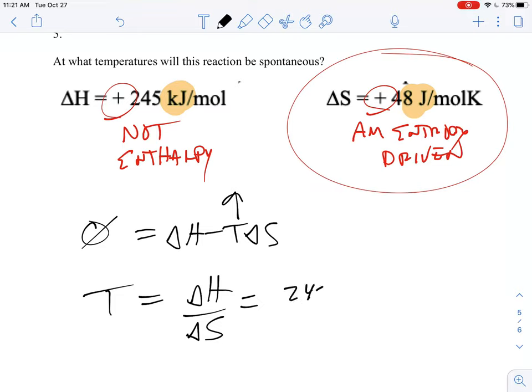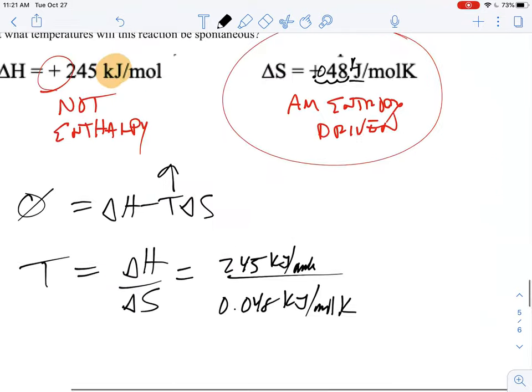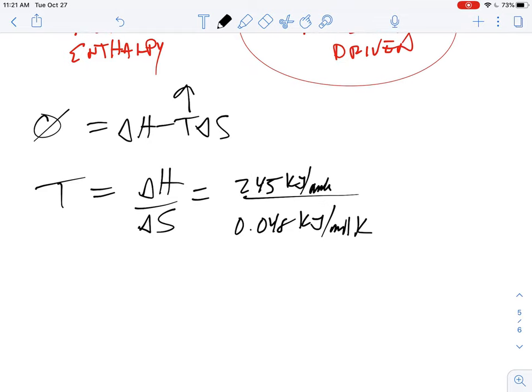I'm going to take my 245 kilojoules per mole and divide that by 0.048 kilojoules per mole Kelvin. Because this is in joules per mole Kelvin, I'm going to have to put that as 0.048 kilojoules before I do that.